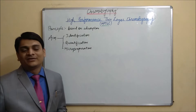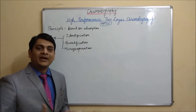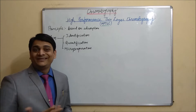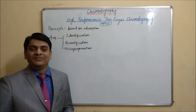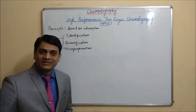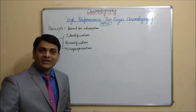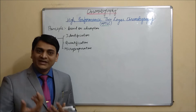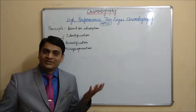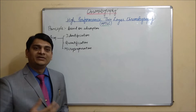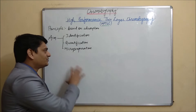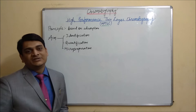Now coming to micropreparation. As I have already discussed preparative TLC — it is an alternate of column chromatography — isolation of compounds takes place by preparative TLC. The amount will be very less compared to column chromatography. Similarly, by using a preparative HPTLC plate, we can isolate a small amount of analyte or compound. These are the aims or purposes of HPTLC.